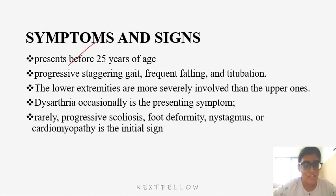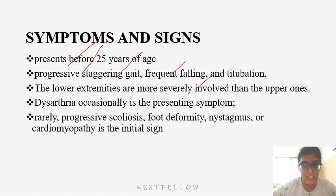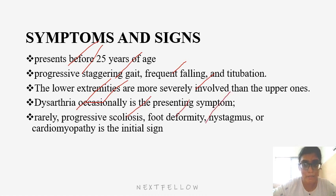The age of presentation is usually before 25 years. Features include staggering gait, frequent falling, and titubation. The lower extremities are more severely involved than the upper ones. Dysarthria is occasionally the presenting symptom. Rarely, progressive scoliosis, foot deformity, or cardiomyopathy may be the initial sign.